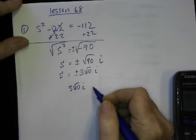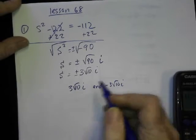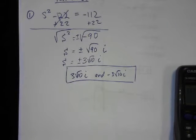3 root 10 I and negative 3 root 10 I. I think I should write them all the way out like that. And then I can check that and see if that works. I'll be right back. I can check that. Number 1 on 68. Yep, that's fine to write it like that.